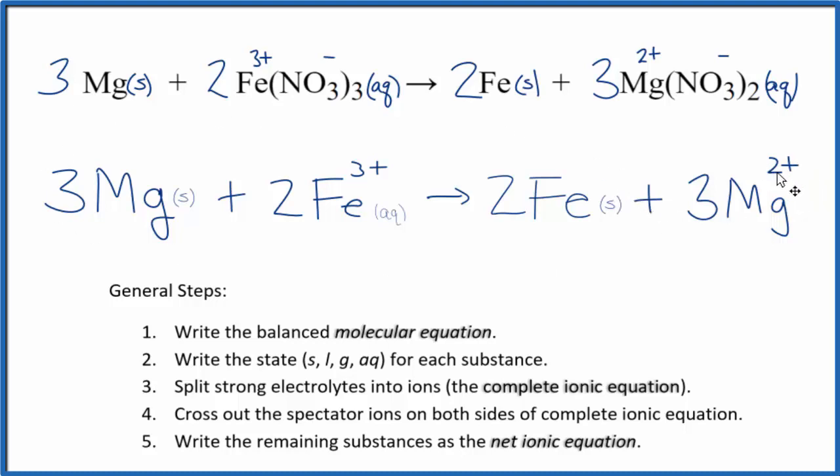If you count the atoms up, they're balanced as well. This is Dr. B with the balanced net ionic equation for the single displacement reaction of Mg plus iron 3 nitrate. Thanks for watchin'.